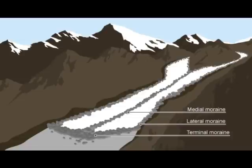Glaciers will always reach a point when they start to melt, mainly due to the rise in temperature as they descend down the valley. As the ice melts it cannot carry as much material and therefore deposits it. These deposits are called moraines.